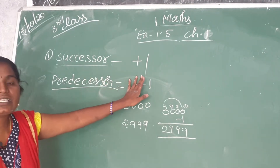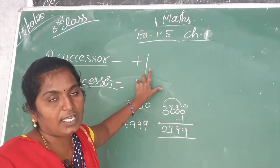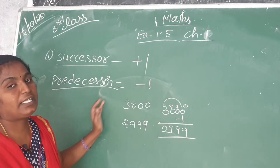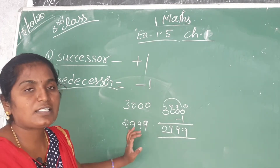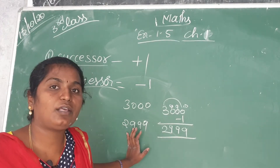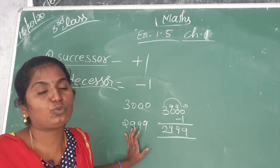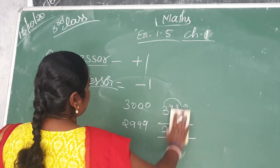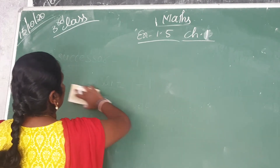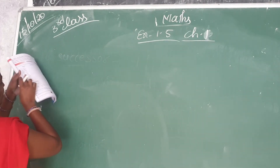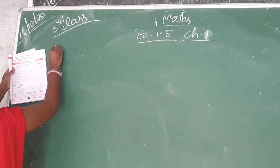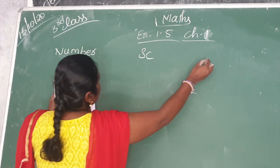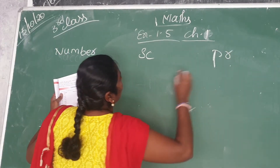So, successor means add 1 to the given number, or write the number that comes after it. Predecessor means subtract 1 from the given number, or write the number that comes just before it. Understood, children? What is a successor and what is a predecessor? Now go to Exercise 1.5. Here are given some numbers. You write the successor and predecessor of those numbers.